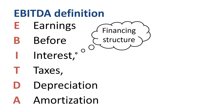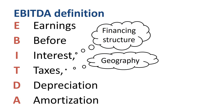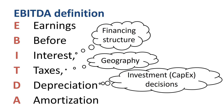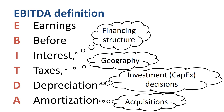Interest is excluded, as it depends on your financing structure — how much did you borrow, and at what interest rate. Taxes are excluded, because it depends on the geographies that you work in. Depreciation is excluded, as it depends on the historical fixed asset investment decisions that the company has made. Amortization is excluded, as it depends on the acquired intangible assets that may have been created in making acquisitions in the past.